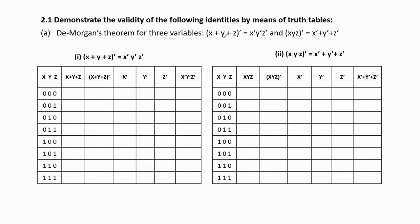Hello guys, today we will discuss the problem related to Boolean algebra in digital logic design or digital electronics. The problem is to demonstrate the validity of the following identities by means of truth tables. That means we have to verify the given expressions with the help of truth tables.